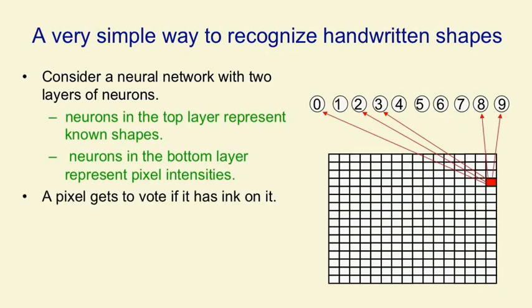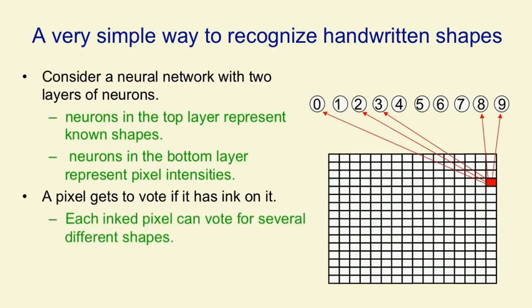If a pixel is active, it votes for particular shapes, namely the shapes that contain that pixel. Each inked pixel can vote for several shapes, and the votes can have different intensities. The shape that gets the most votes wins, so we're assuming there's competition between the output units. That's something I haven't explained yet, and we'll explain in a later lecture.